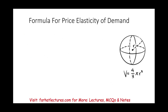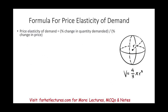First is the formula — how do we compute the price elasticity of demand? The formula is the percentage change in quantity demanded divided by the percentage change in price. Simply put, I change my price, and as a result my quantity demanded will change. Find the percentage change in quantity demanded and divide that by the percentage change in price.